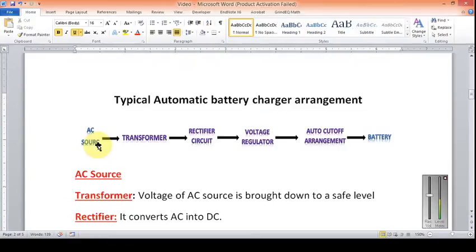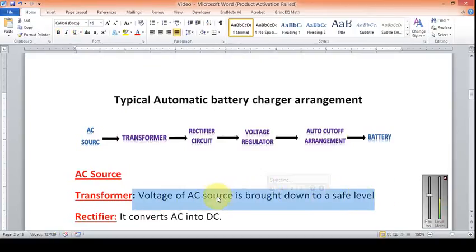The AC source is followed by a transformer. The purpose of the transformer is to bring the AC voltage to a safe level, because if we try to rectify at high voltages, we will need expensive and high-rating components which will also be very difficult to find. So we use a transformer to bring the AC voltage to a safe level so that we can easily work with it.